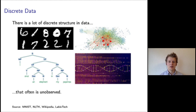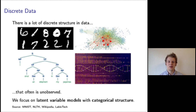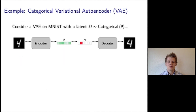In practice, it may often be expensive or impossible to obtain labels of the discrete structure at large scale. As a result, the discrete structure might be unobserved. Then, it is natural to model this data with a discrete latent variable model. In this work, we focus on latent variable models with categorical structure.